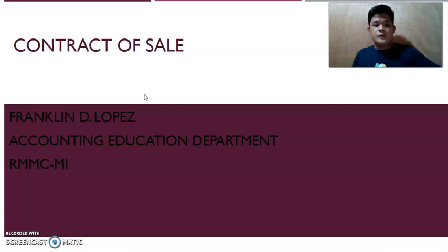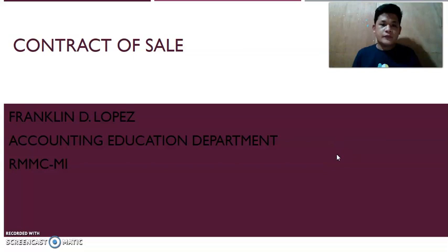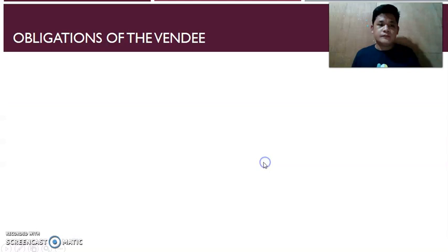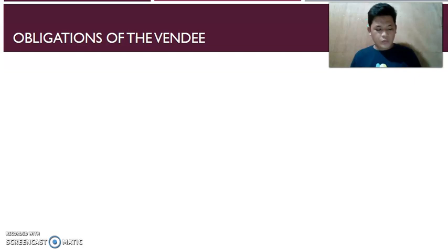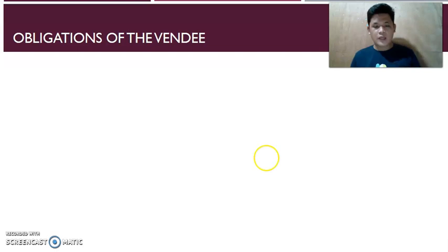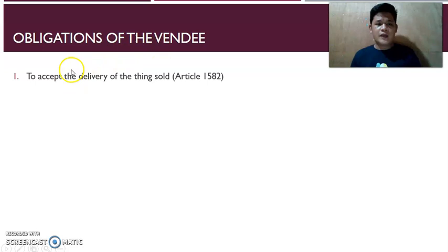Good evening class. This will be the first topic of the final, so let's start. Let's discuss obligations of the vendee. Obligations of the vendee starts at Article 1582. Article 1582 states: the vendee is bound to accept delivery and to pay the price of the thing sold at the time and place stipulated in the contract. If the time and place should not have been stipulated, the payment must be made at the time and place of the delivery of the thing sold.